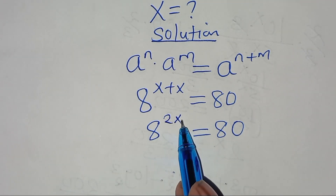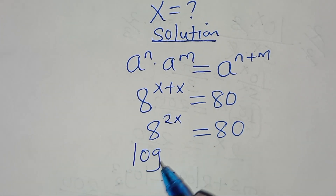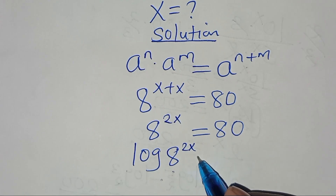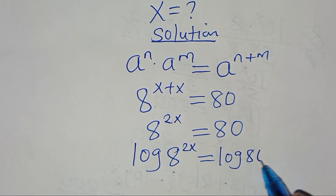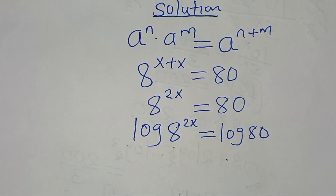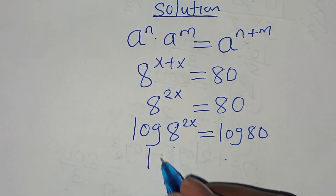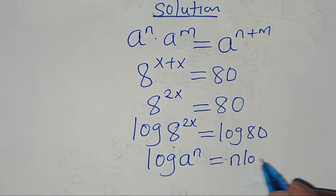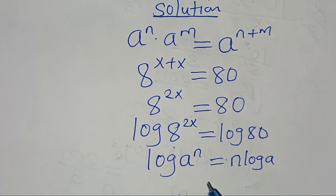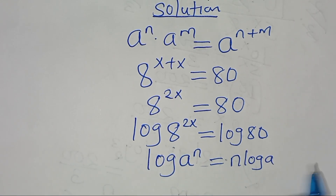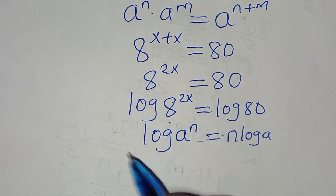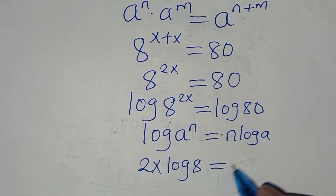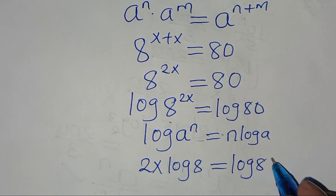To solve for the value of x, we introduce logarithm on both sides, so we have log of 8 to the power 2x equals log 80. Now, log 8 to the power 2x is in the form of log a to the power n, which we can express as n log a. Applying this power rule property of logarithm, log 8 to the power 2x becomes 2x log 8.